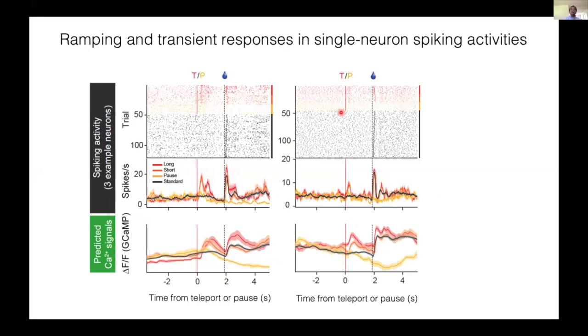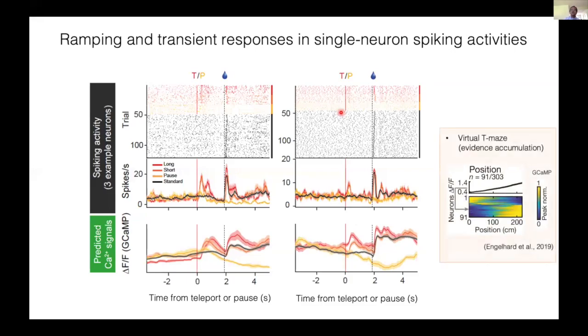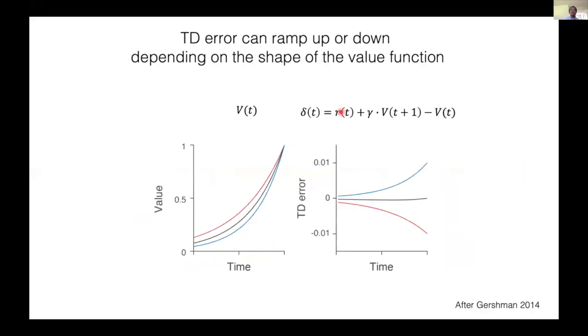Therefore, regardless of whether the activity ramps up or down, single neuron activities were consistent with reward prediction errors. It is interesting to note that these positive and negative ramps have been observed at the single neuron level in previous imaging studies from the Witten lab. As I mentioned earlier, a positive ramp can result from a more convex value function. And similarly, a less convex value function can result in a TD error that ramps down. The derivative-like computation can provide a unifying account of this type of diversity observed in single neuron activities.